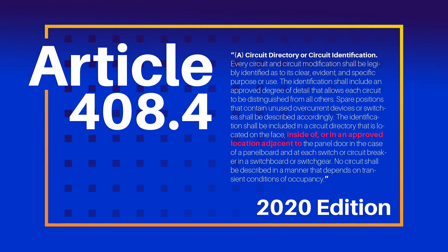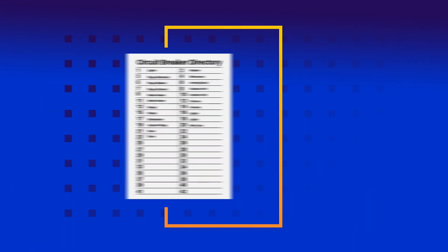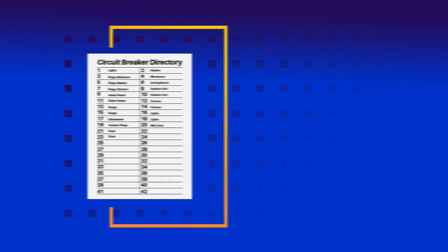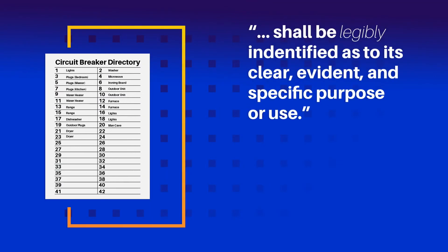With this added language, the code now allows for more written detail. Instead of having a circuit directory say 'lights,' you can now clarify each entry on the schedule and not have to fit it on the factory-provided materials. Either way, the code maintains that every circuit and circuit modification must be legibly identified as to its clear and specific purpose.